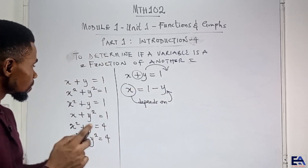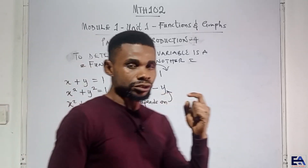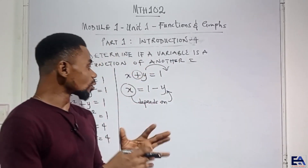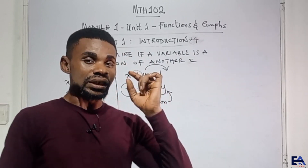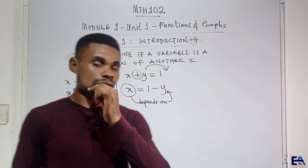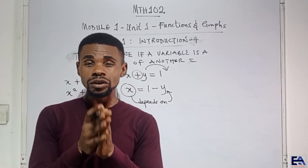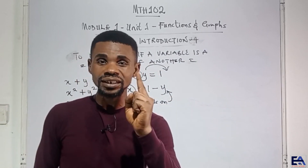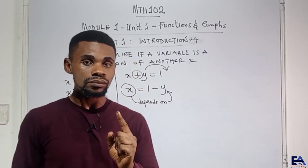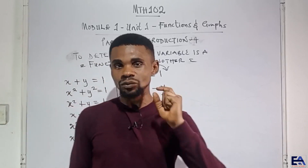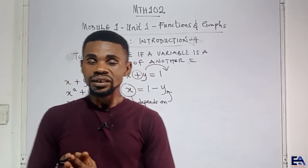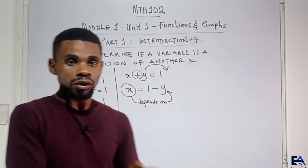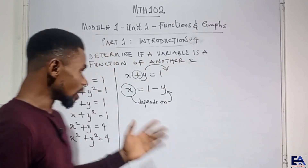Meaning that whatever the value of y is, if we slot it into this calculation, that is what determines the value of x. So x depends on y. But when you come to this matter of dependency, there is a condition. That condition implies that for one variable to depend on the other, whenever we slot any value in the independent variable, it should give only one answer — one answer for the dependent variable. A case whereby it gives more than one possible answer, then we say that variable does not depend on the independent variable.